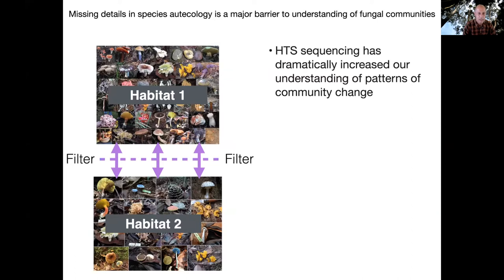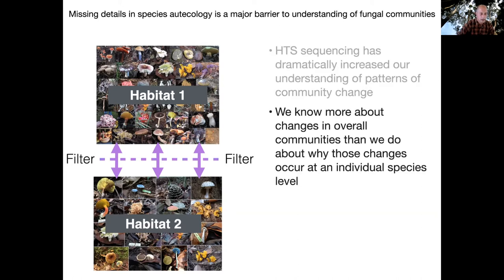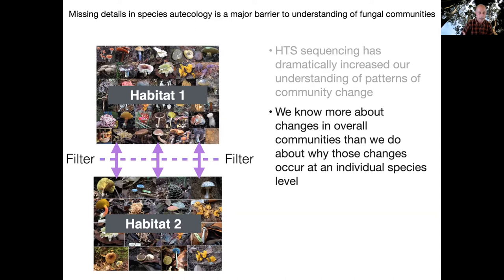We're all aware of how high-throughput sequencing has really revolutionized our understanding of fungal communities and how it's getting exponentially easier and cheaper with time. As a result, we know a lot about overall changes in community composition. We can look at samples from habitat one and habitat two and compare differences in composition, often making hypotheses about what environmental filters might be determining membership across these two different habitat types. We know a lot about overall changes in community structure, more than we do about why those changes occur at the individual species level.